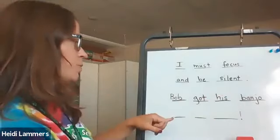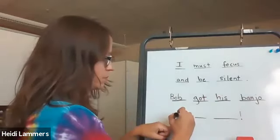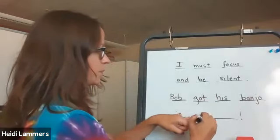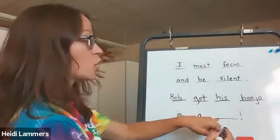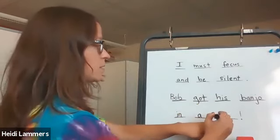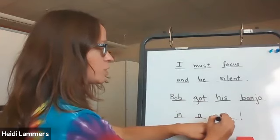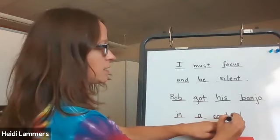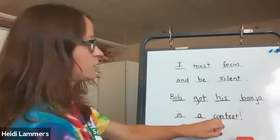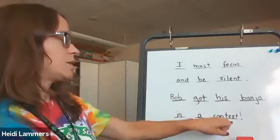Bob got his banjo in. Closed syllable. A. There's one word. Contest. Contest. C-on. There's a short o. Test. There's short e. Two syllable word. Contest. Two closed syllables.